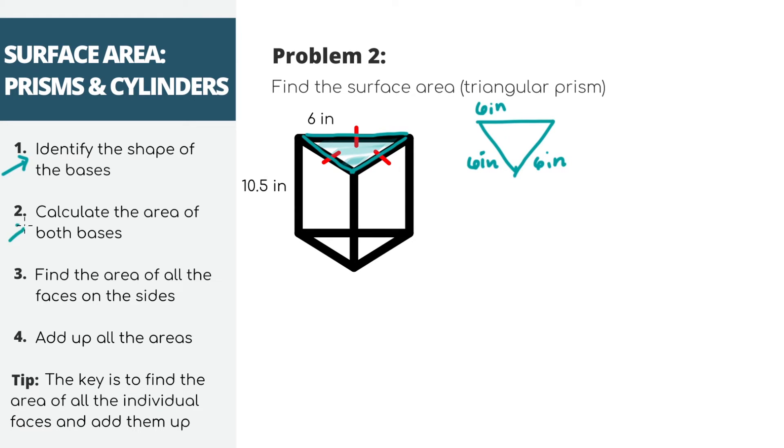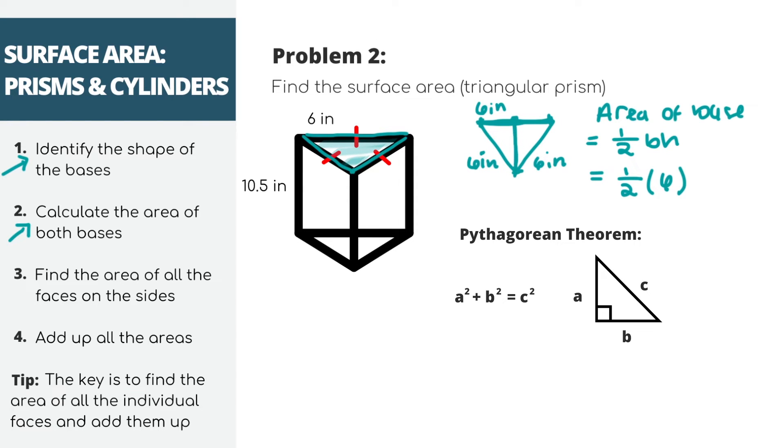Our next step is to find the area of the bases, which basically means find the area of these triangles. If you remember, the formula for the area of a triangle is 1 half base times height. So let's do a mini area problem. We have the base, which is 6 inches. We have the base, but we don't have the height directly. So we have to use a little a squared plus b squared equals c squared action to find the height first.